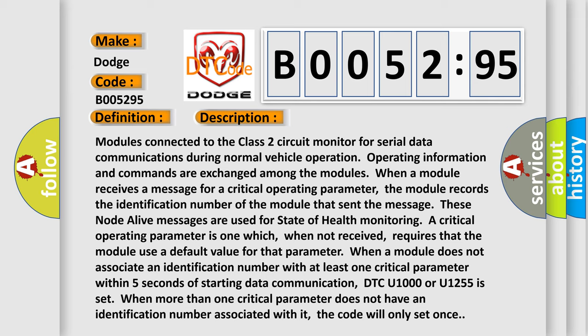Monitoring a critical operating parameter is one which, when not received, requires that the module use a default value for that parameter. When a module does not associate an identification number with at least one critical parameter within five seconds of starting data communication, DTC U1000 or U1255 is set. When more than one critical parameter does not have an identification number associated with it, the code will only set once.